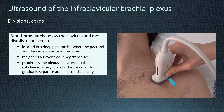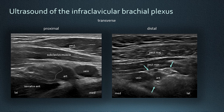Now we move to the infraclavicular brachial plexus, where you start immediately below the clavicula. This is a more difficult part of the plexus to examine because it's located much deeper, in between the pectoralis muscles and the serratus anterior muscle — so sometimes you will need a lower frequency transducer, usually at 12 MHz, to be able to visualize the plexus. The more proximal part of the plexus is still located in one piece, lateral to the artery, underneath the subclavius muscle and above the serratus anterior muscle.